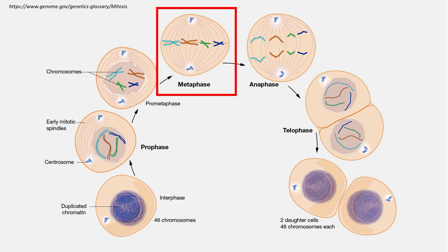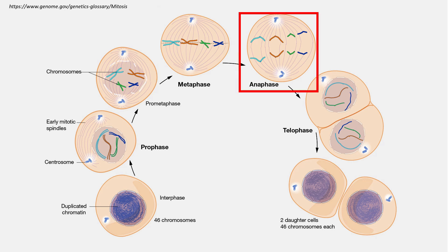The next stage in mitosis is metaphase — I call this the meet-in-the-middle stage. The spindle fibers attach to the centromeres on the chromosomes and align to meet in the middle, called the metaphase plate. Anaphase is the next stage — I call this the away stage. In this stage, the spindle fibers pull the chromosomes apart into sister chromatids to opposite poles of the cell.